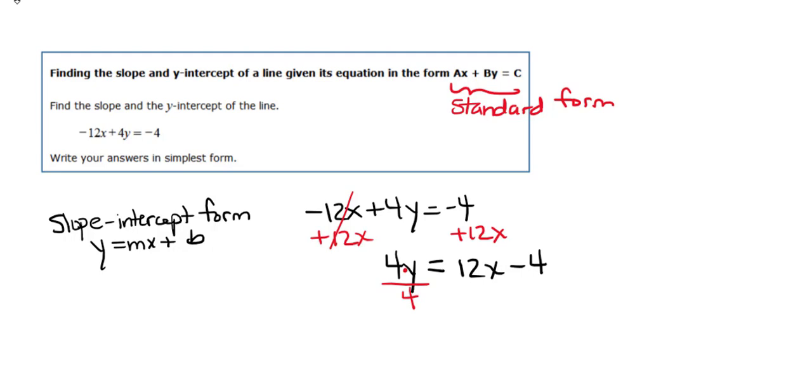Now this step is a source of a lot of errors because people don't realize they have to divide both sides, all terms by 4. In other words, on the left, we're going to have 4 divided by 4 is just 1y or y. You don't have to write the 1.